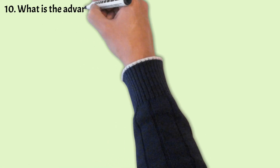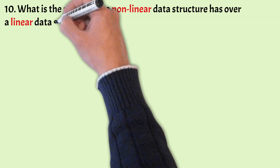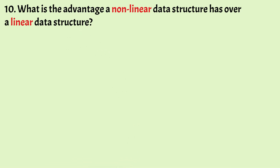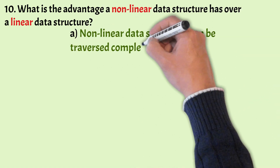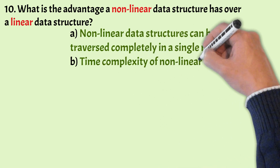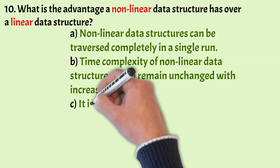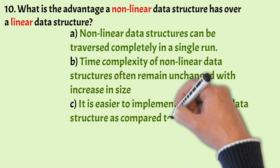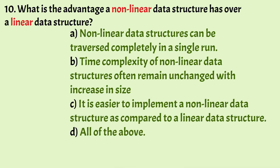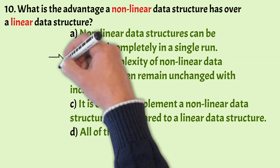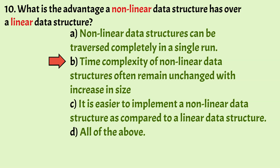Coming to the next one. What is the advantage of non-linear data structure over a linear data structure? The options are: non-linear data structure can be traversed completely in a single run; time complexity of non-linear data structure often remains unchanged with increase in size; it is easier to implement a non-linear data structure; and all of the above. The correct answer is Option B: time complexity of a non-linear data structure often remains unchanged with increase in size. A non-linear data structure such as trees can help find data faster when searching, which is why trees are often used for indexing in a database.